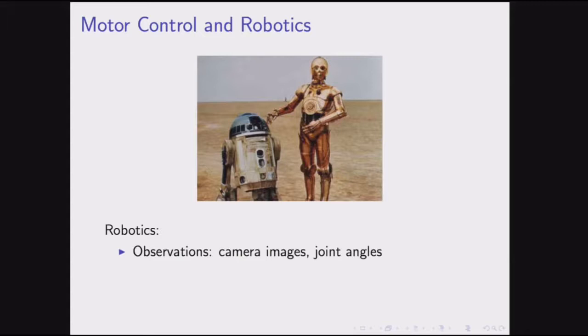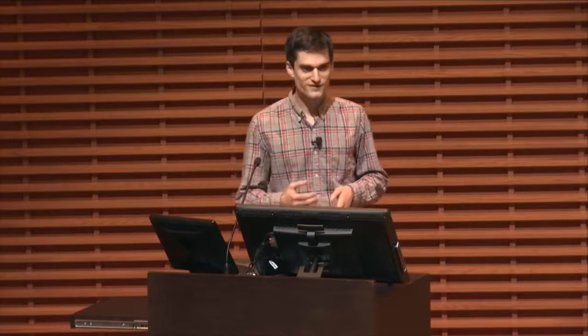A few examples of where you might apply reinforcement learning. One is robotics: observations are camera images and joint angles of the robot, actions are the joint torques you're applying, and the reward depends on what you want the robot to do — such as staying balanced, navigating to a target location, or something more abstract like serving and protecting humans.